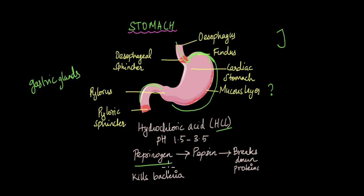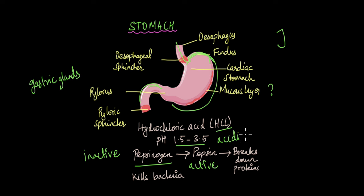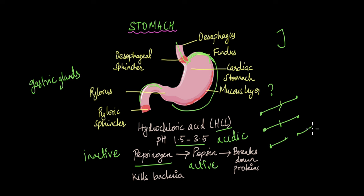Pepsinogen is an inactive enzyme — it cannot function yet. It has to be converted into its active form, which is known as pepsin. For pepsinogen to be converted to pepsin, it needs a pH of around 1.5 to 3.5 — it needs an acidic environment. That acidic environment is provided by hydrochloric acid. So, in the acidic environment, in the presence of hydrochloric acid, pepsinogen is converted to pepsin. This active form, pepsin, begins to break down proteins. Proteins are long molecules, and in the stomach, these lengthy proteins are broken down into smaller proteins called peptones. The complete digestion of proteins occurs in the small intestine; in the stomach, proteins are only partially digested into peptones.